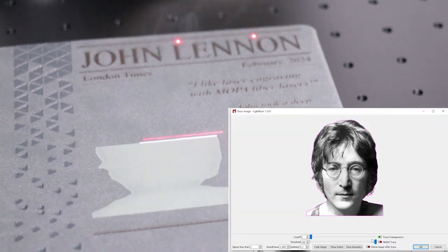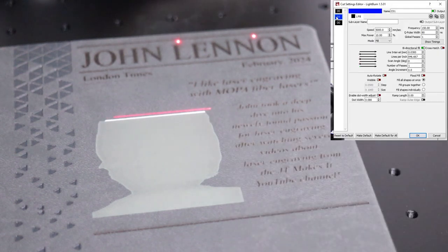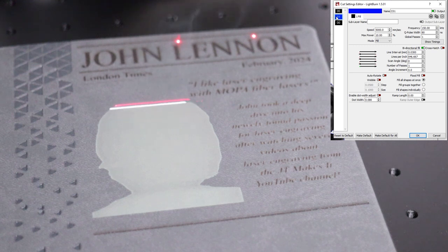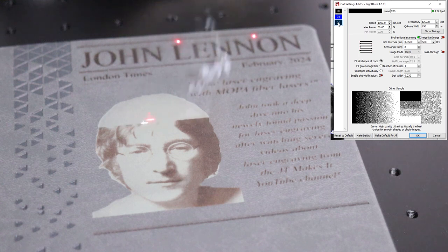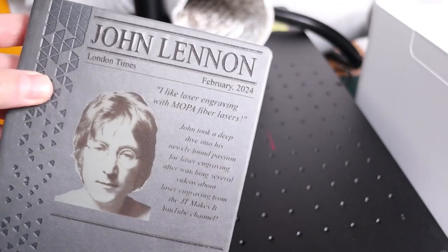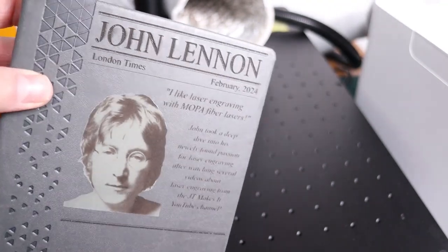Here is a trick for engraving photos. First, you trace the image to create a shape which is filled with high speed and low power in order to provide a uniform background. Then you engrave an image on top of it, which results in perfect result each time. The outcome looks great, and it makes for a great personalized gift.